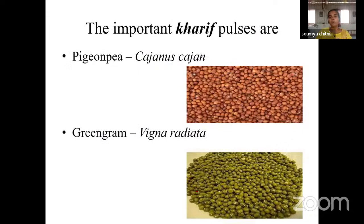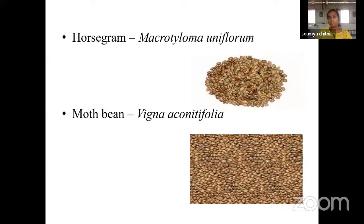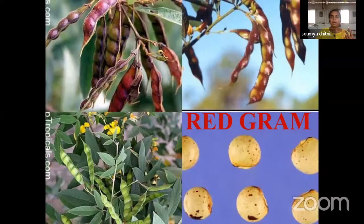The important curry pulses in our country are pigeon pea (red gram), green gram, black gram, cowpea, horse gram, and moth bean — six important curry pulses. Today I will be talking about red gram, green gram, and black gram among the curry pulses.